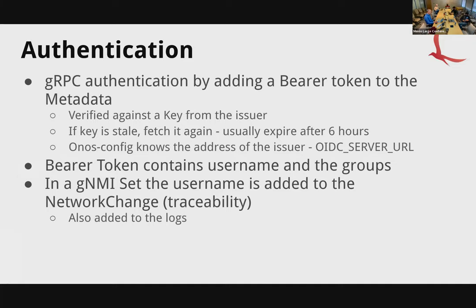Authentication is done with gRPC by adding a bearer token to the metadata of the gRPC call — it's like HTTP but added to metadata rather than a header. It's a bearer token with the word 'bearer', a space, and the token. Once that token comes in, OnusConfig verifies that the key is valid by checking with the issuer. OnusConfig needs to know who the issuer is and the URL; the issuer's keys are publicly available. Keys expire after six hours, and if stale, OnusConfig must fetch them again — there's a loop that validates the key, and if it returns an error saying the key is expired, it fetches the key again and retries validation. There's an environment variable for OnusConfig that tells it the address of the issuer.